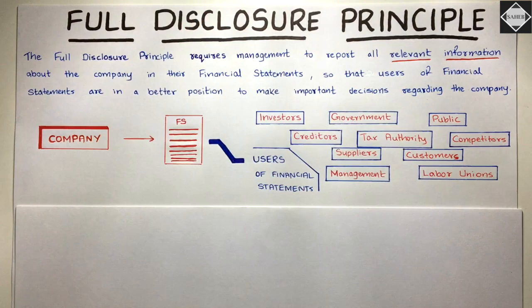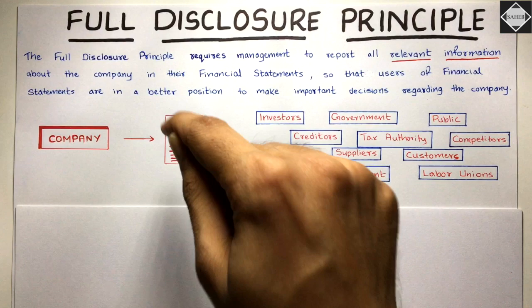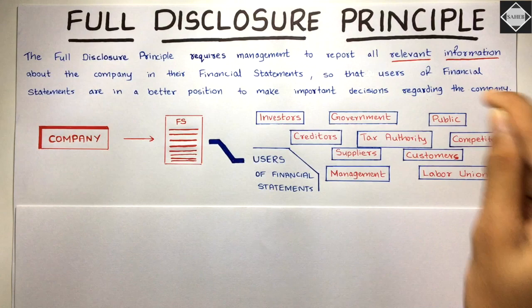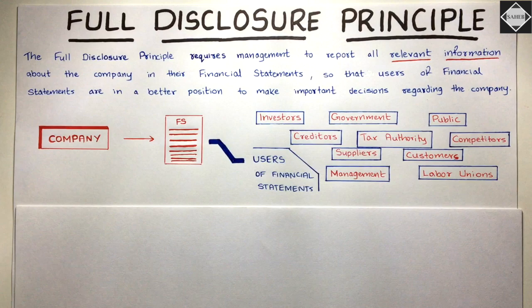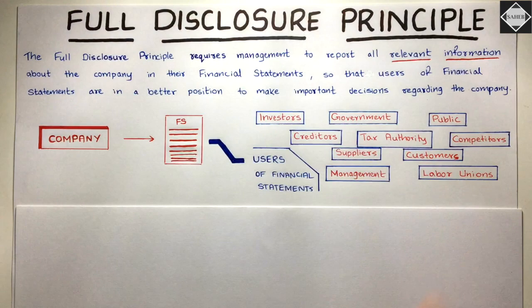After reading those financial statements, users will be in a better position to make important decisions regarding the company. External stakeholders — not the management — all the external stakeholders are not directly involved with the company. They don't know what is happening inside. I'm talking about big companies like MNCs, Infosys, Reliance, Tata — these large companies.